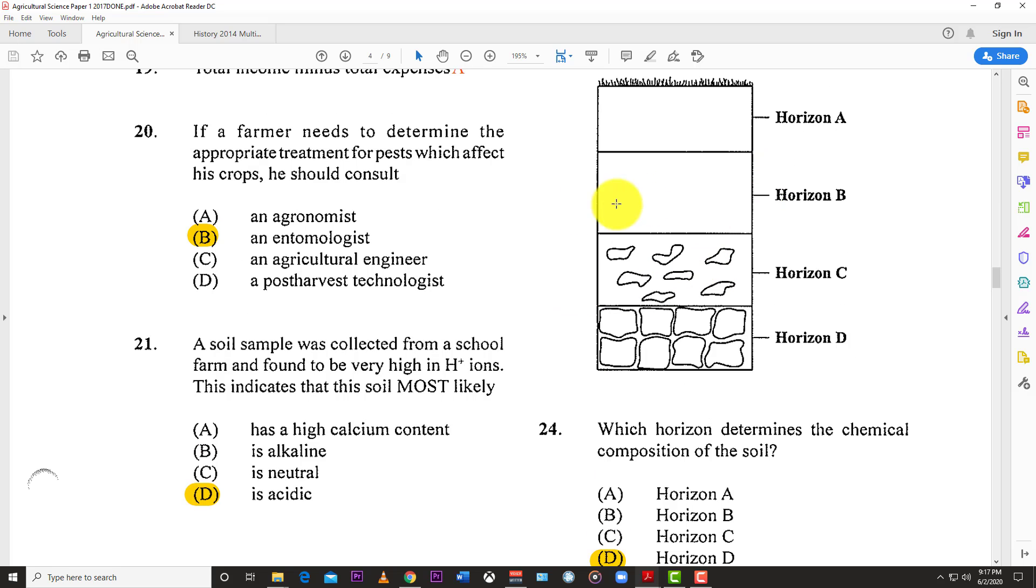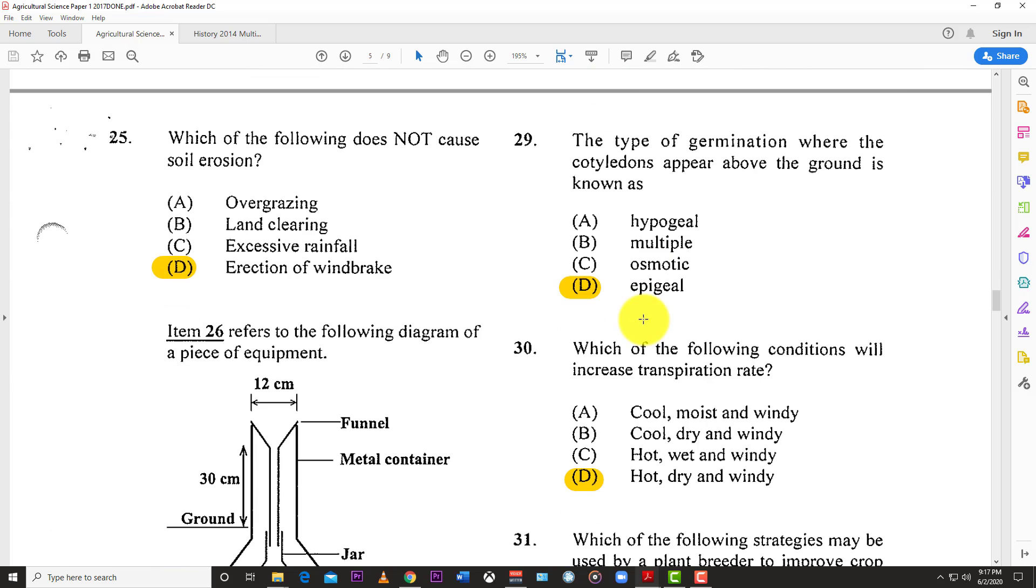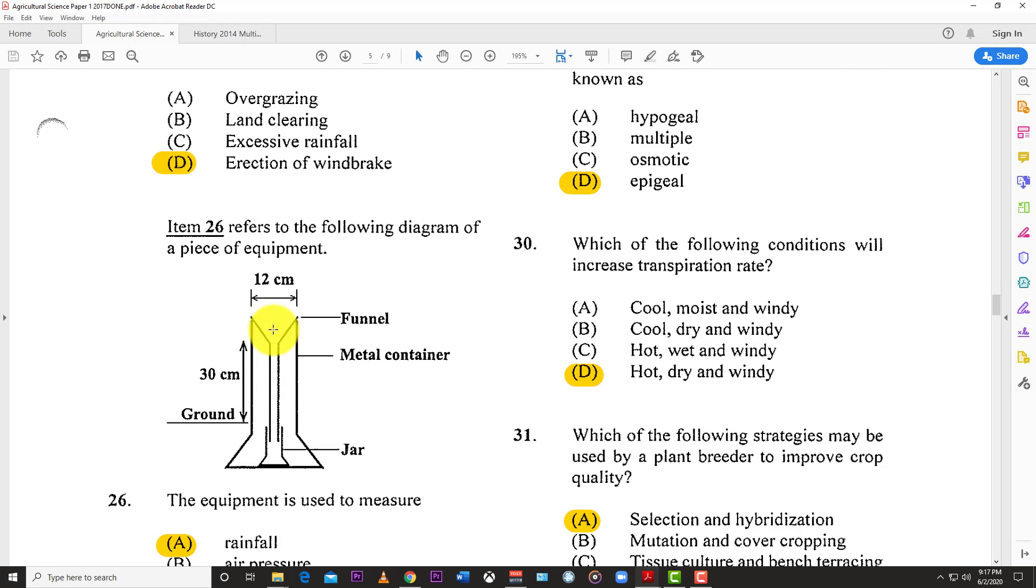Number twenty-four: In this diagram of the soil profile, which horizon determines the chemical composition of the soil? The answer is D, the parent material. It breaks down to become the other layers and affects the composition of the rest. Number twenty-five: Which of the following does not cause soil erosion? D, erection of windbreak. These are tall trees that you plant to reduce the effect of wind on your crops and prevent soil erosion.